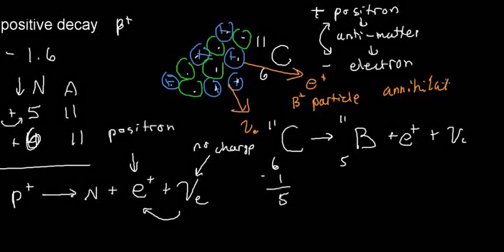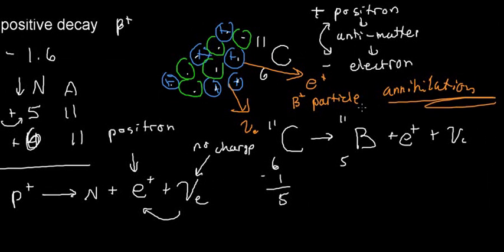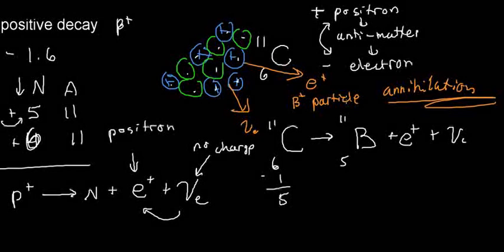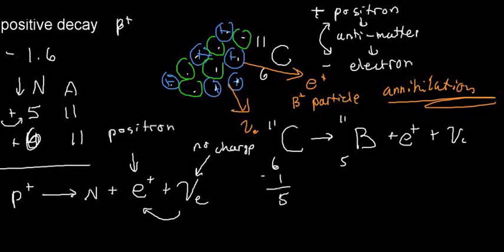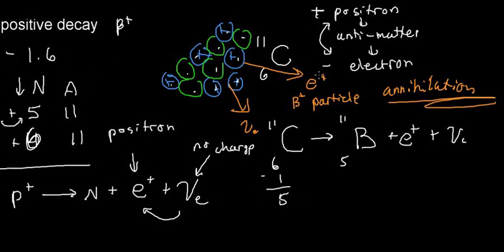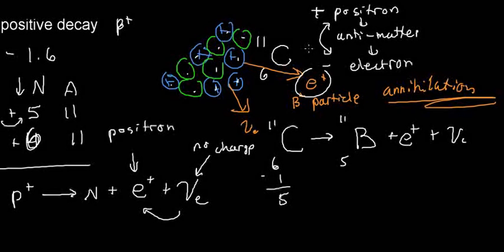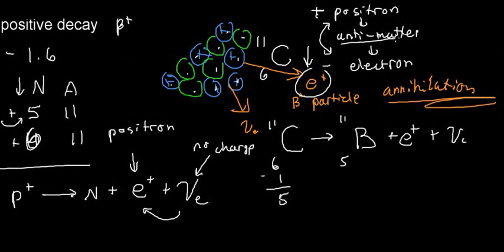That process is called annihilation — an interesting phenomenon that is super important to understand because it's later used for imaging. The next video will open with what really happens to the positron, what antimatter means, and its implications.